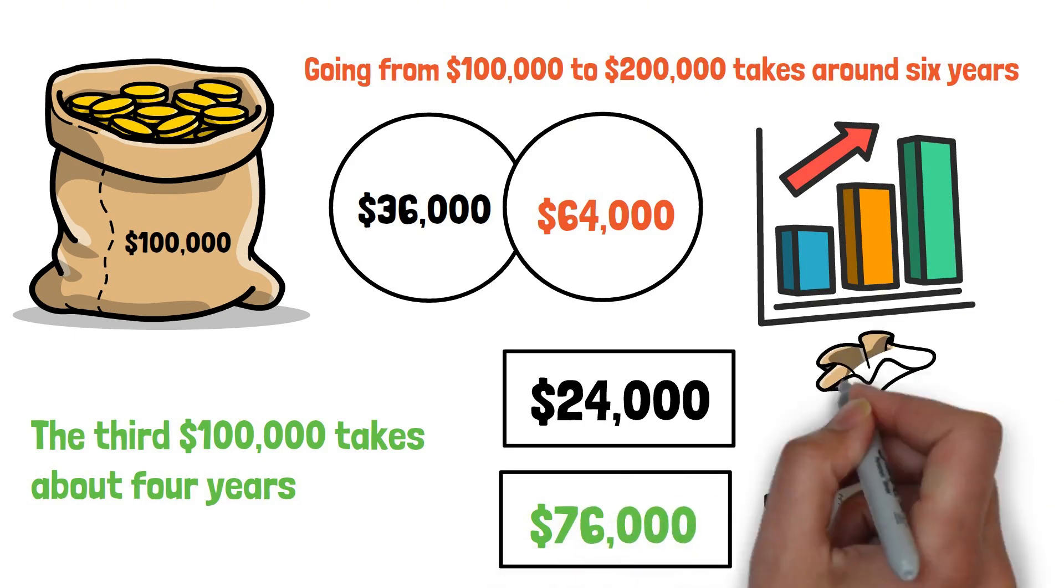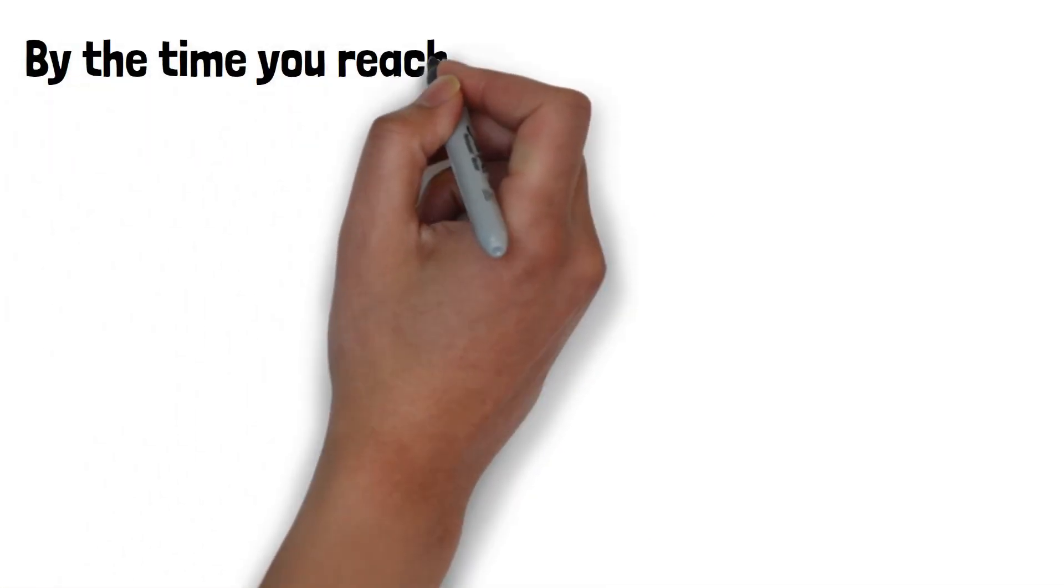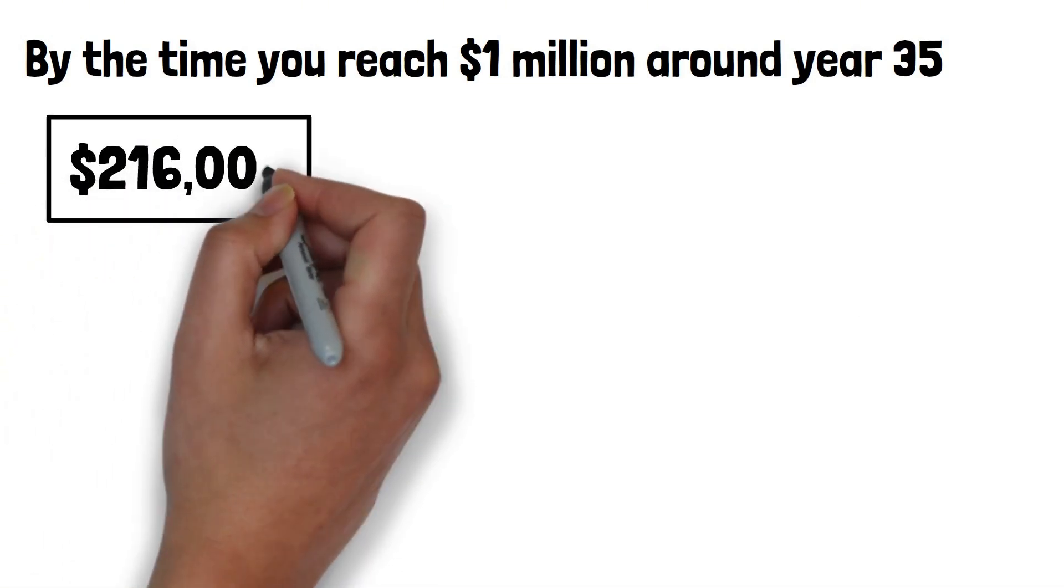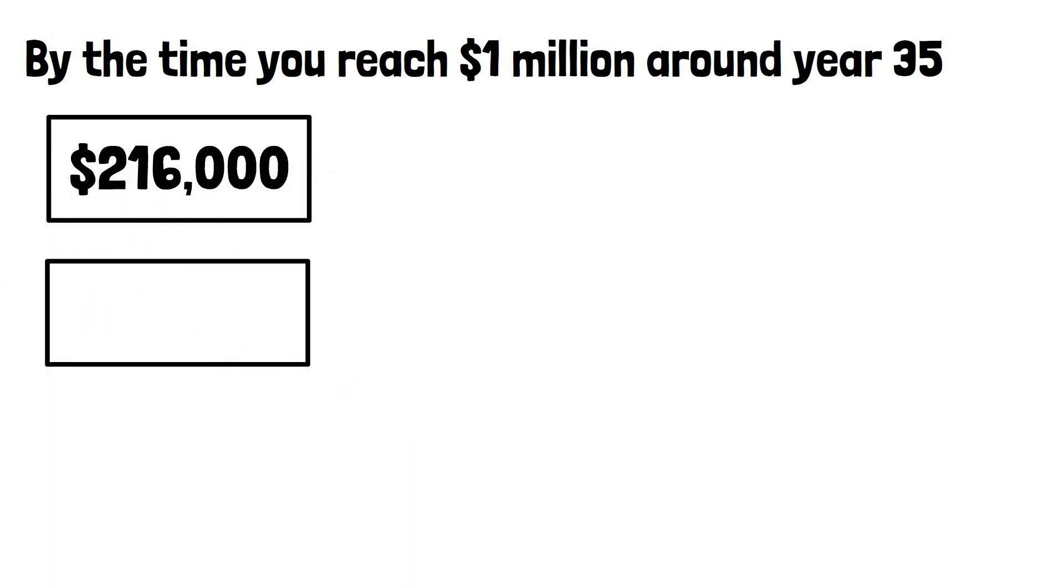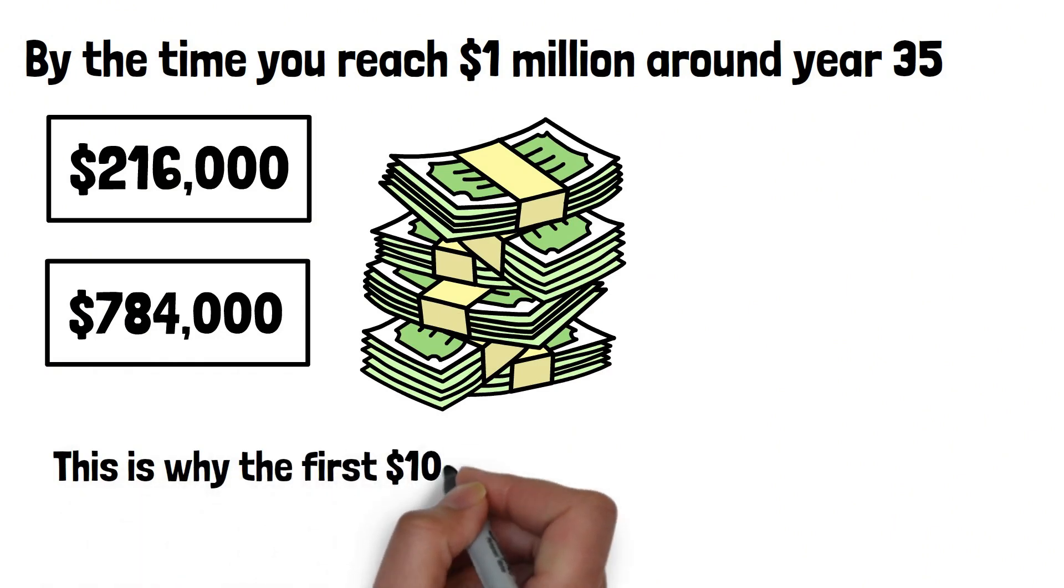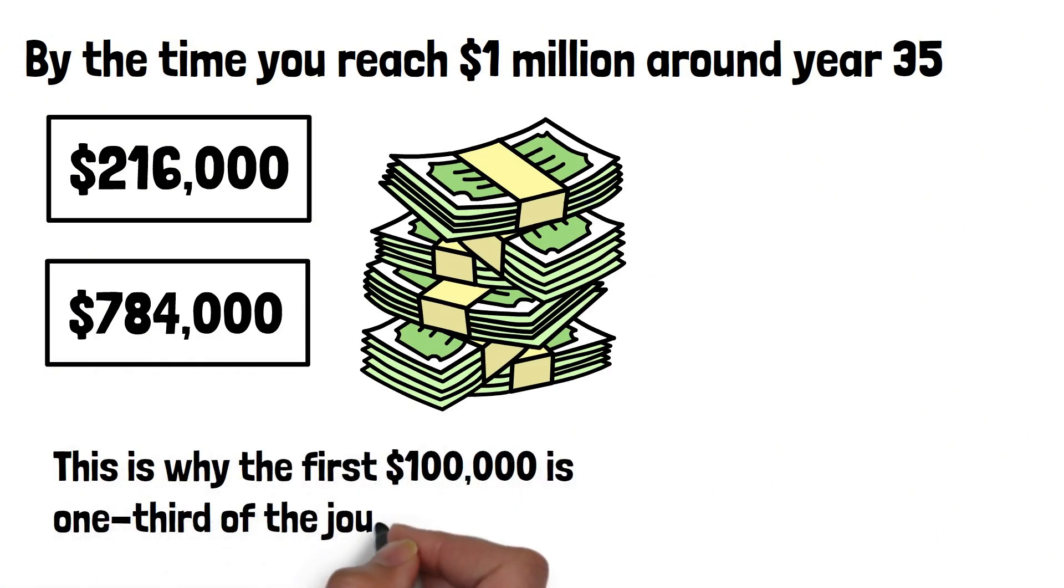Your contributions matter less and less, and your balance matters more and more. By the time you reach $1 million around year 35, you will have contributed about $216,000, and compounding will have contributed roughly $784,000. Your money outworked you by almost 4 to 1.